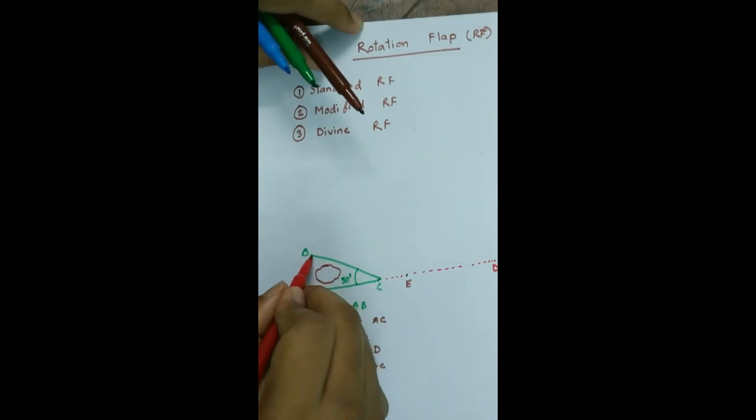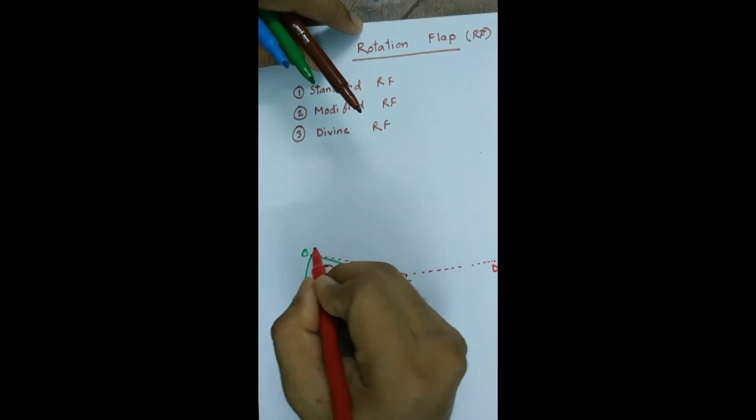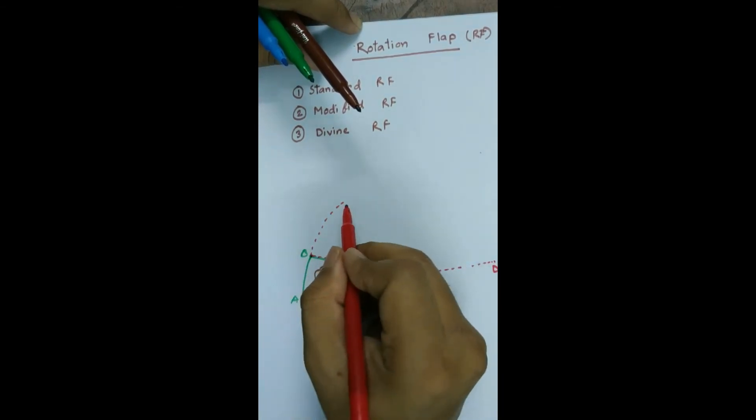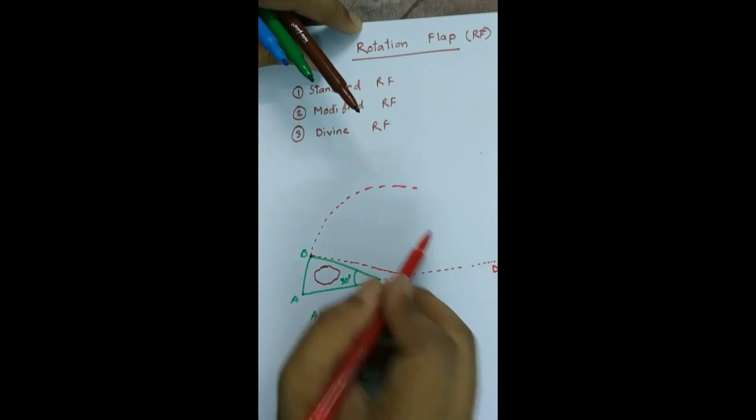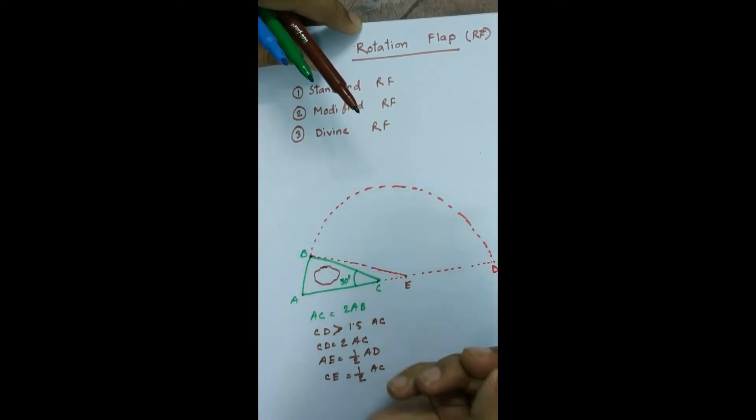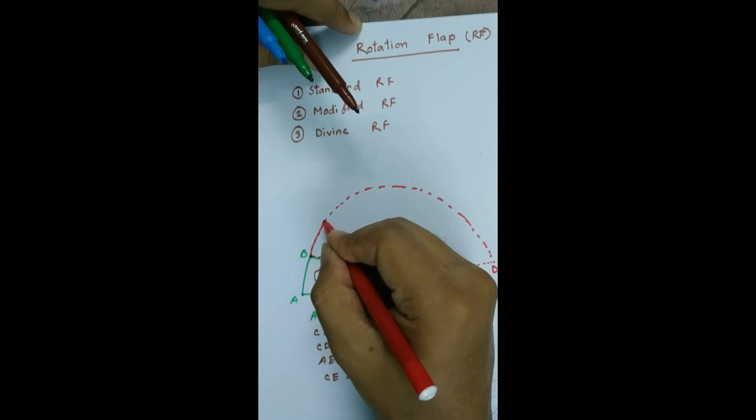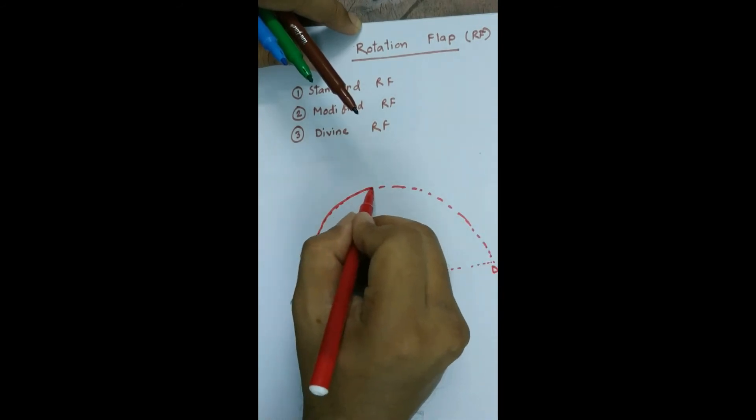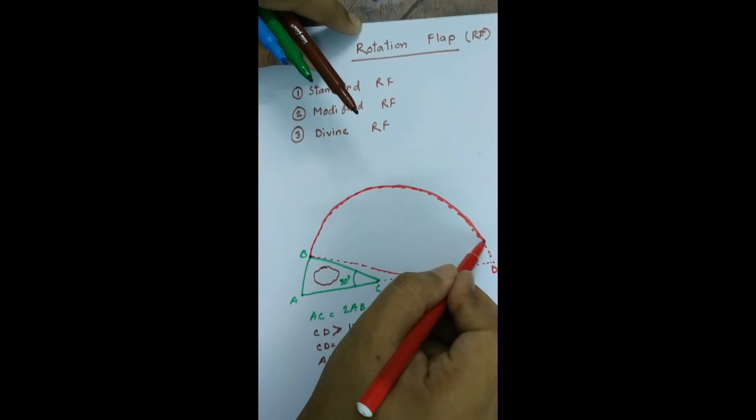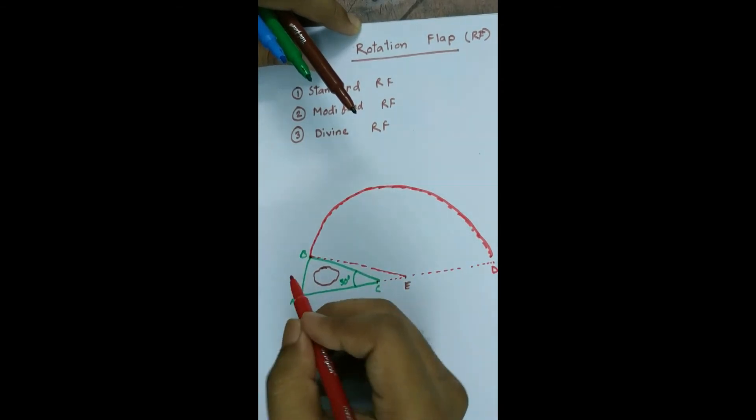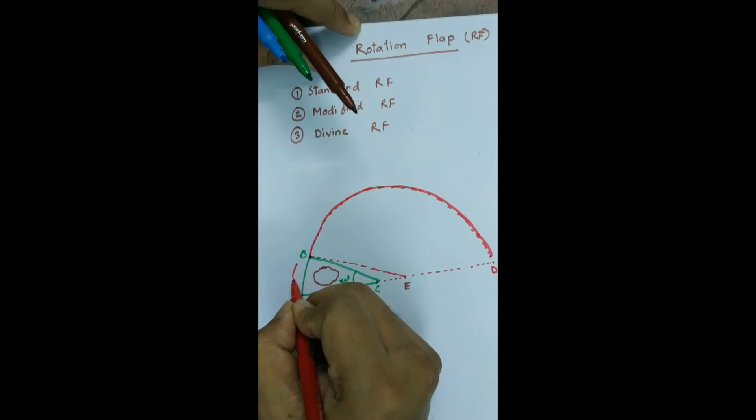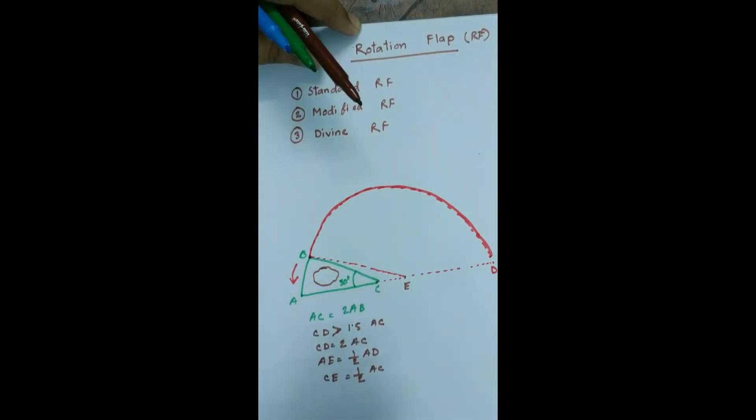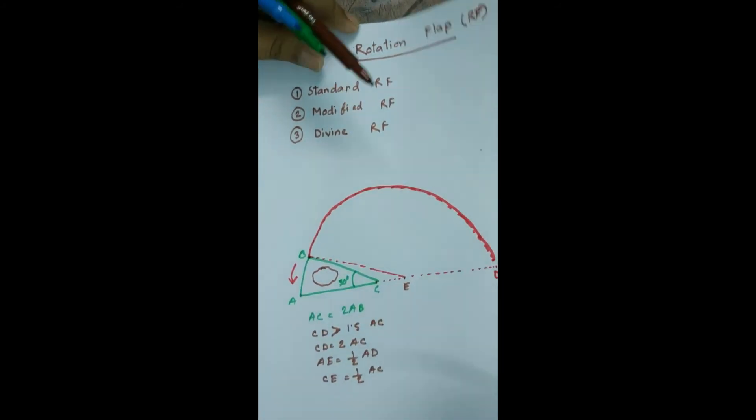Now we are going to draw an arc taking the radius of BE. Now this is our flap. Now we raise the flap and advance the B to A point. So ultimately the flap will look like this.